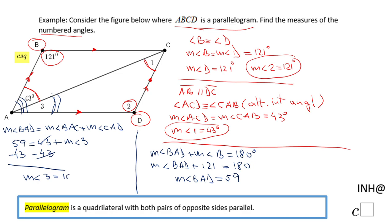So the measure of angle 3 is 16 degrees. And that's it! If you enjoyed this video, please don't forget to click the like button and come back on C squared for more help. Thank you!